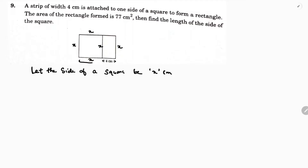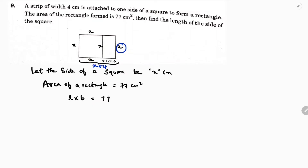Now, looking at the diagram, the length will become x plus 4. So length is x + 4 and breadth is x. The area of the rectangle is given as 77 cm². Using the formula, length into breadth equals 77: so (x + 4) × x = 77.